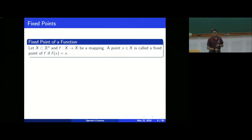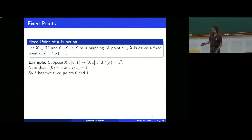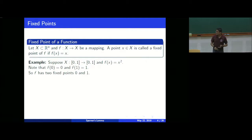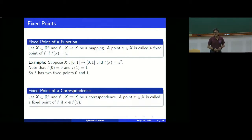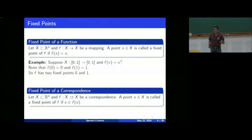A simple example: take x squared. F(0) is 0 and F(1) is 1, so they are both fixed points. Similarly, you can define a fixed point for a correspondence: if you enter the value x and x lies within the output F(x), then that's a fixed point of the correspondence — it's like asking whether the value you entered is contained in the result.